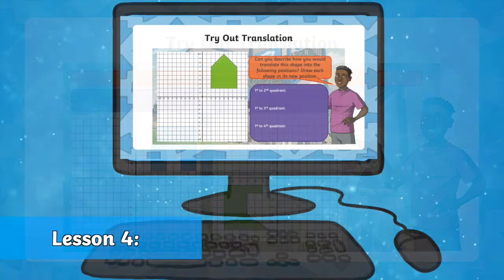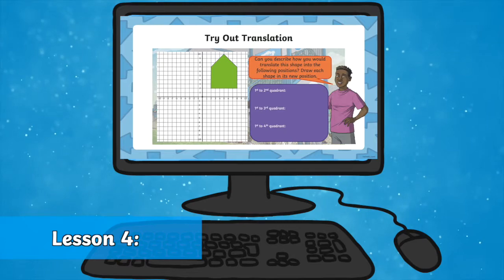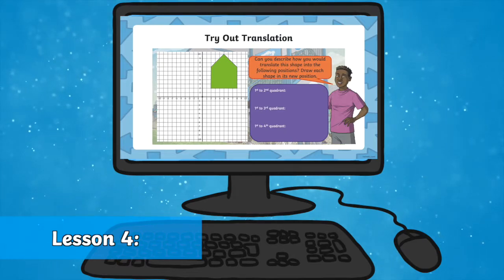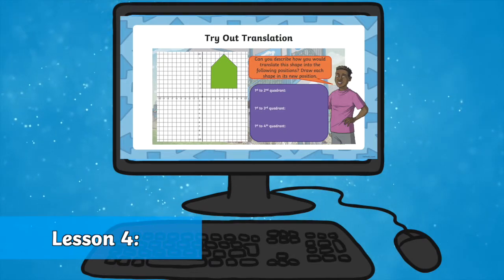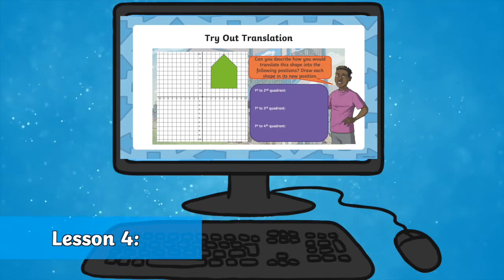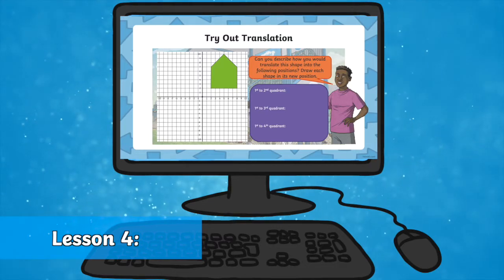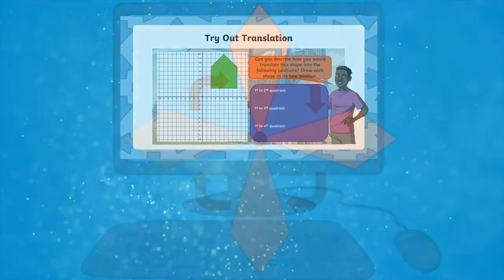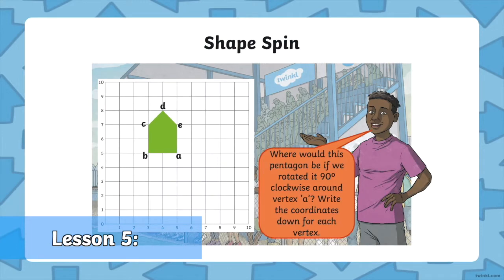Now for a challenge — can you describe how you would translate this shape into the following positions? From the first to the second quadrant, the first to the third... In the final lesson, children will learn to rotate shapes on a grid.